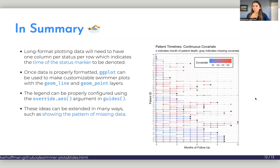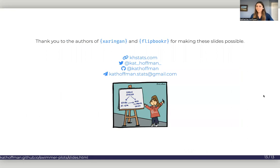This plot is showing patterns of missing data using transparency and a continuous covariate. It's from a 2019 blog post, but the slide deck corresponds to a 2022 blog post that I have. And yes, thank you all so much for listening and to the authors of Sherrington and FlipbookR for making these slides possible. Again, we'd love to hear from you all after this and we'll take any questions now. Thank you.